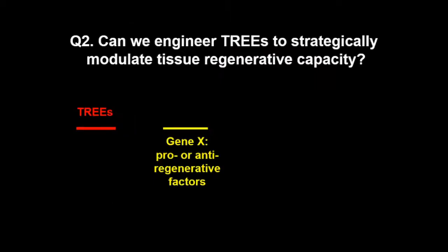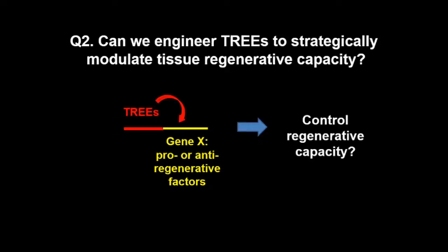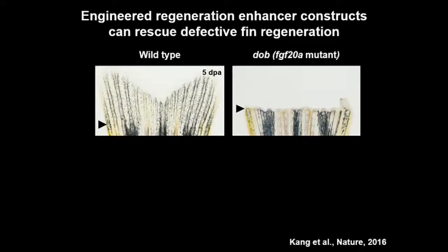Recent studies have shown that enhancer location is very important for maintaining normal physiology and development — mislocalization of enhancers can cause diseases such as cancer and developmental defects. We got the idea that enhancer location affects phenotype, and we applied TREEs to modulate tissue regenerative capacity. To do this, we designed a transgenic construct in which we positioned a TREE upstream of a pro- or anti-regenerative factor, and examined whether this engineered transgenic construct could control regenerative capacity. We applied this enhancer engineering to the fin first.